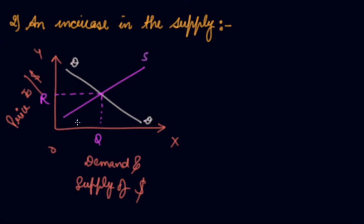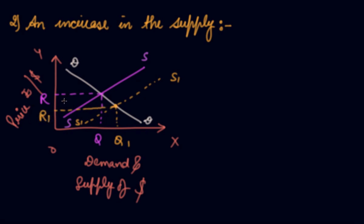Now they've said that there is an increase in the supply, which means there is a rightward shift of the supply curve. Your supply of US dollars is now more than the demand. The new quantity is Q1 and the new rate R1 is restored.